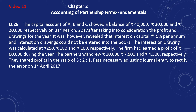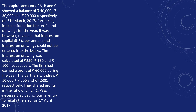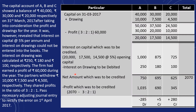If you have a journal entry prepared, then you have to make an adjustment. Look, the capital account of A, B and C show a balance of Rs. 40,000, Rs. 30,000 and Rs. 20,000. At the end of the year, the amounts are Rs. 50,000, Rs. 37,500 and Rs. 24,500 respectively after adding drawings back.